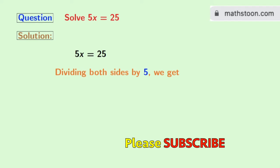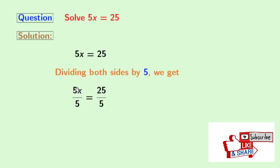Doing that, we get 5x by 5 is equal to 25 by 5. Look that in the left hand side, we have 5 in both the numerator and the denominator. So this gets cancelled and we are left with x.